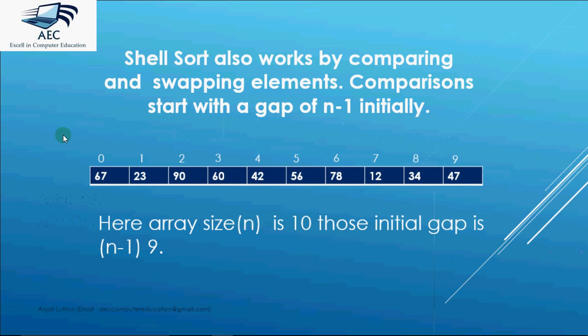So how shell sort works is in shell sort we start from a gap between the numbers which is equal to n-1. So if I have 10 numbers I'll be comparing elements at gap of 9 in my first step and gradually this gap is going to decrease like in the next step we'll have gap 8.